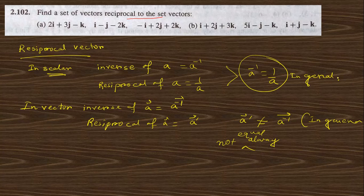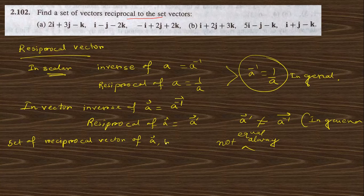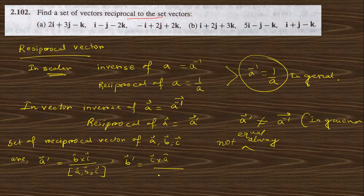They have some properties, and we derive them in the next question using this formula. We need the formula to get the reciprocal vector. The formula for the reciprocal set: A prime = (B × C) / [A B C], B prime = (C × A) / [A B C], and C prime = (A × B) / [A B C], where [A B C] denotes the box (scalar triple) product.